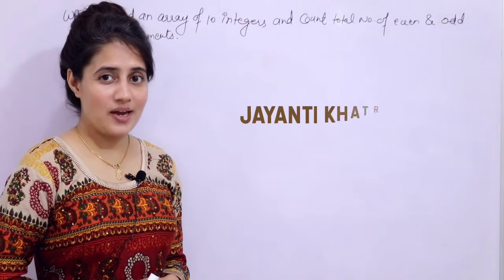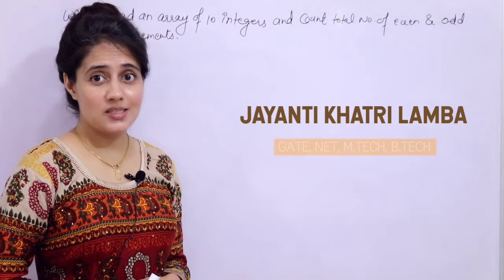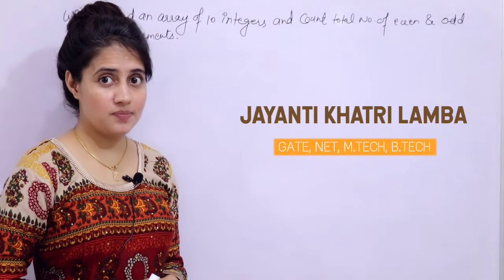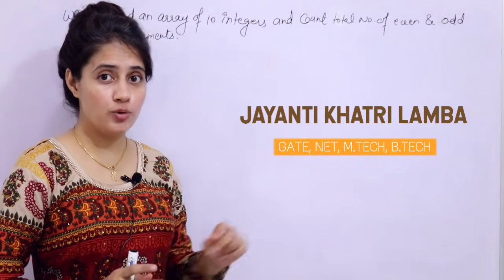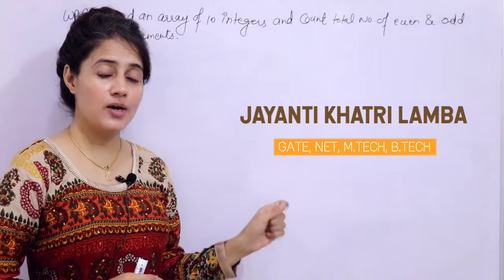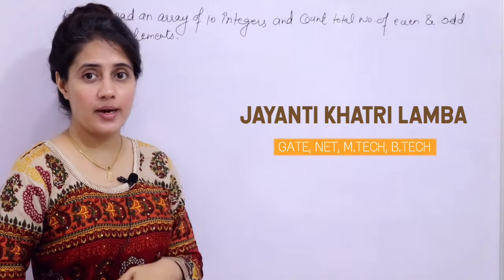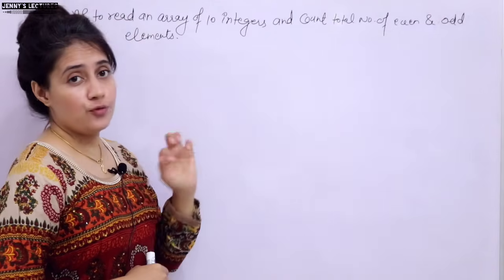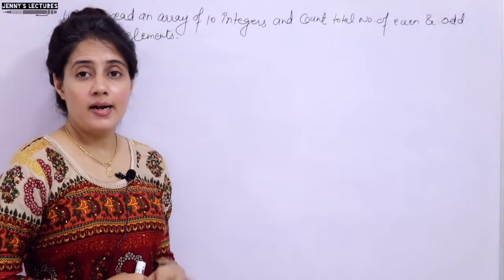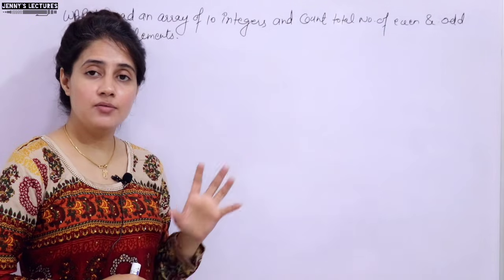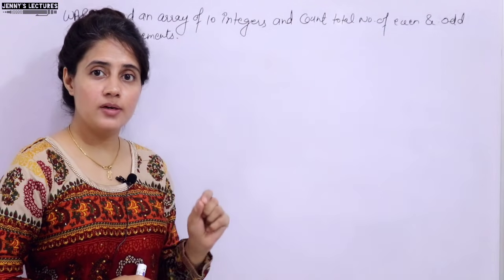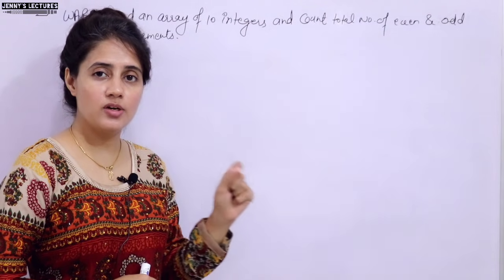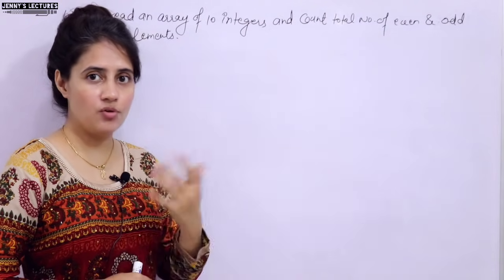In this series on learning programming in C, we are discussing programs on arrays. We have discussed two programs already. In this video, I will discuss one more program: you have to read an array of 10 integers, and then we will count the total number of odd numbers and the total number of even numbers in that array.